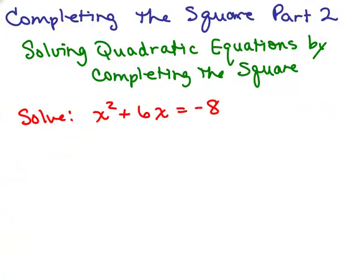This is part two of completing the square. In part one we showed how to take a binomial like x squared plus 6x and add something to it to make it a perfect square trinomial. Now we're going to use that to solve quadratic equations.